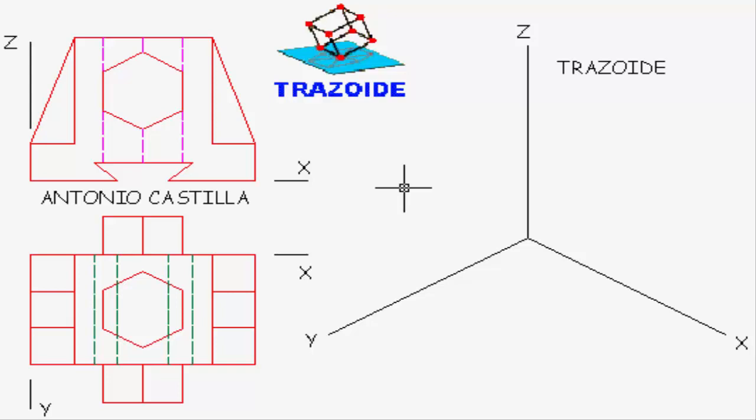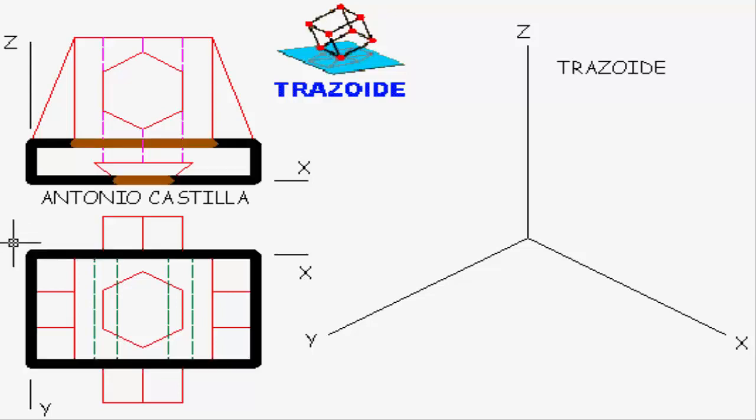To draw a perspective is always advisable to break the body into simpler volumes. For example, the lower body can consider constituted by a box, here marked with thicker line.